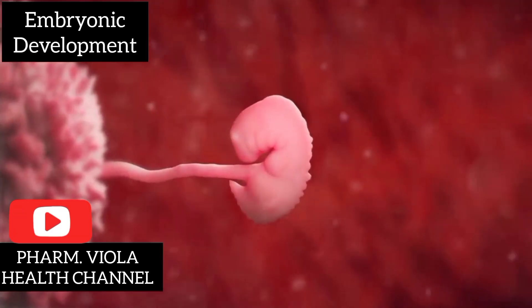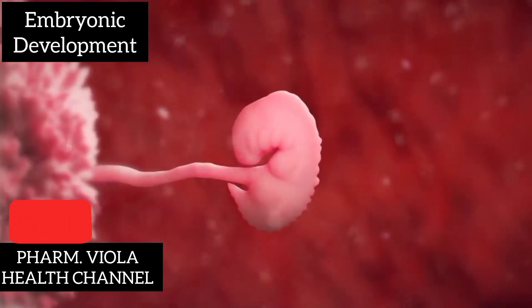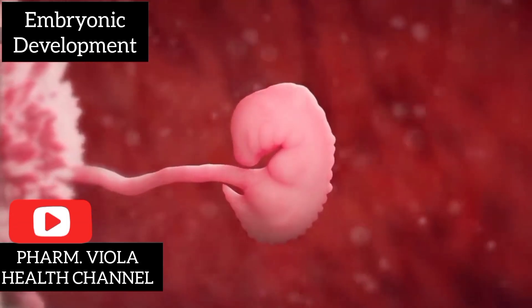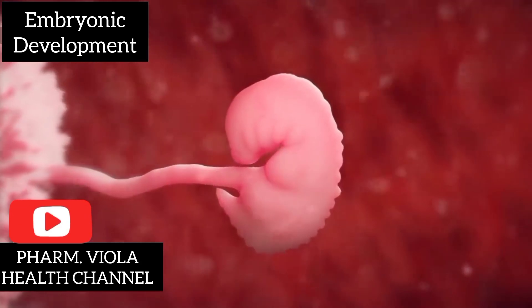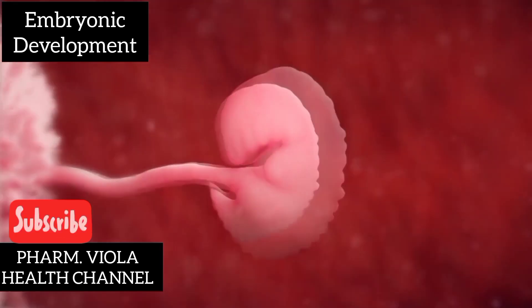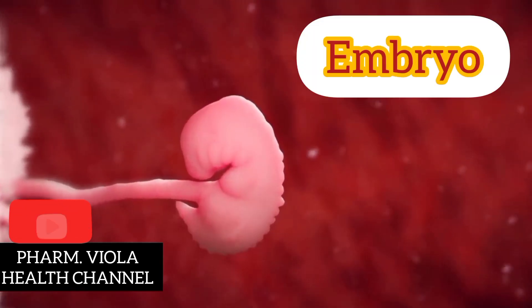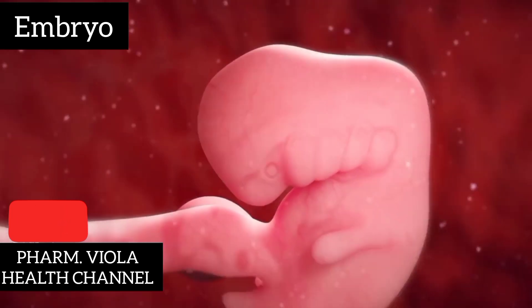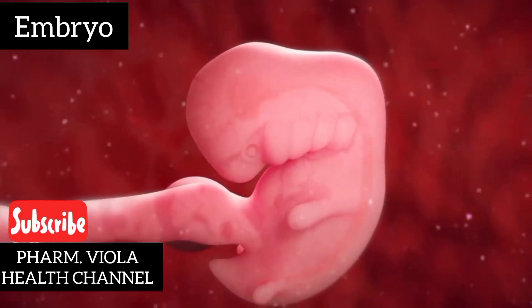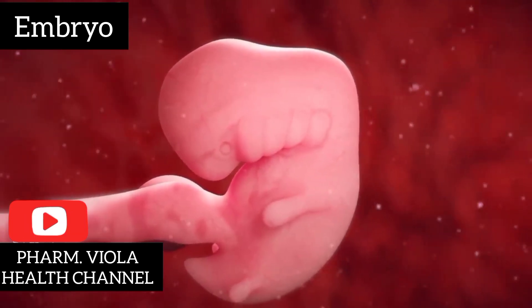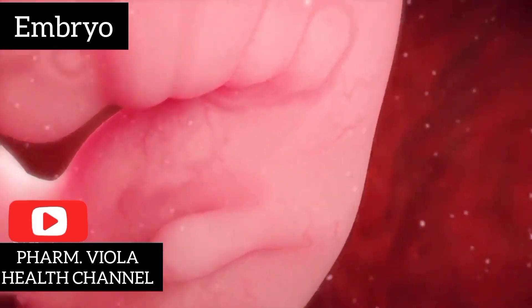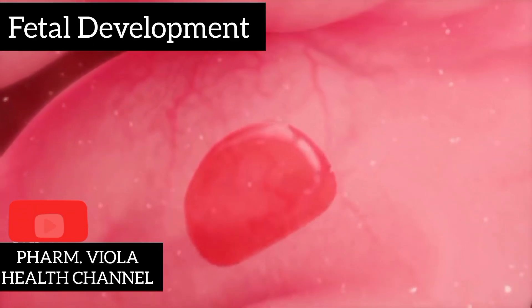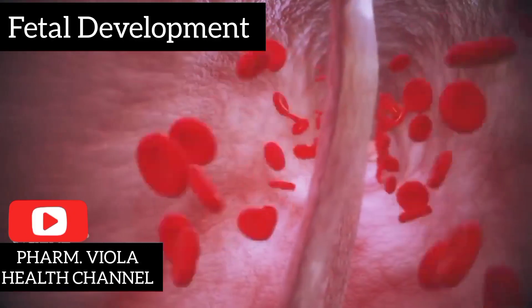Embryonic Development: The developing organism is now referred to as an embryo. Over the next weeks, the embryo's cells continue to specialize, forming the three germ layers that give rise to different bodily structures. Critical organs and systems, such as the heart, brain, and limbs, begin to develop.